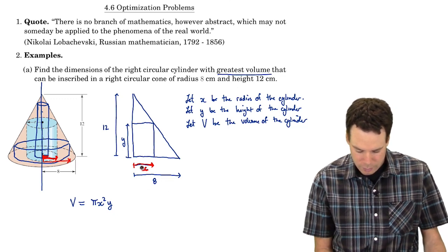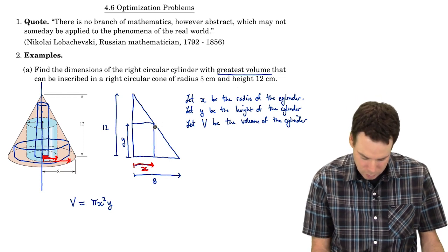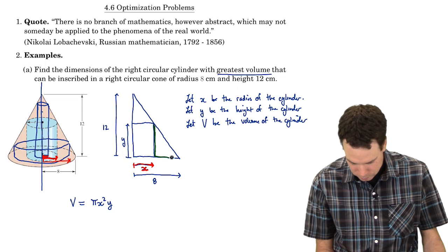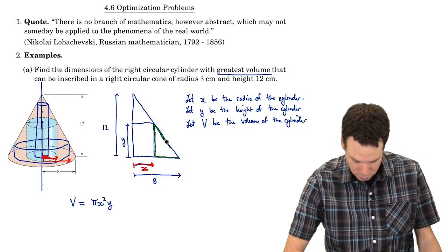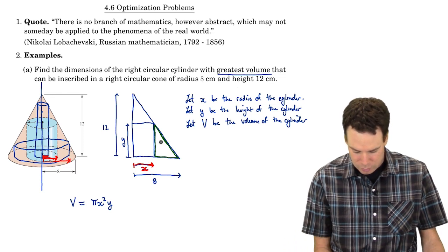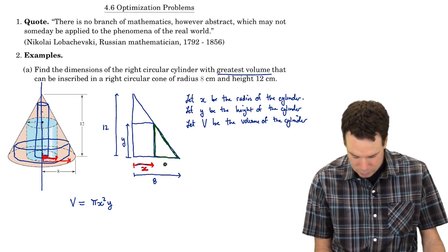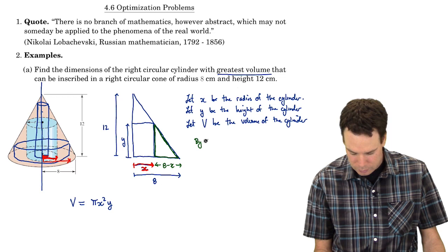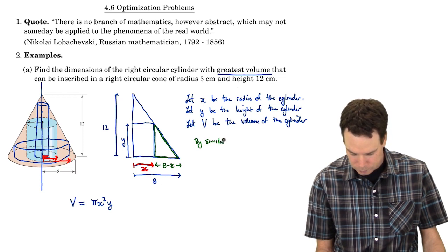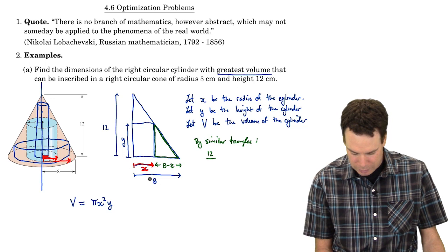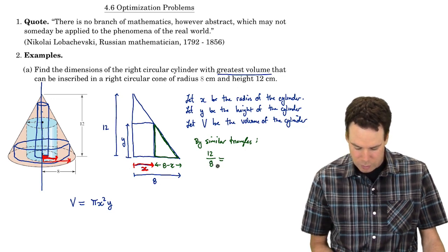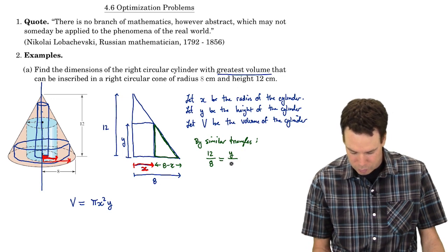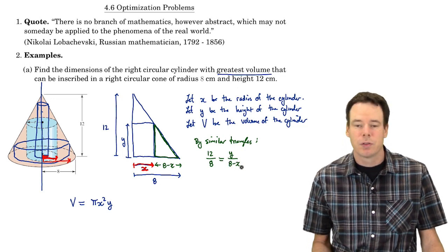I have a set of similar triangles here. The green triangle is similar to the larger triangle it sits inside. The green triangle still has height Y, and its base is 8 minus X — that distance there. So by similar triangles: the height of the big triangle, 12, divided by the base of the big triangle, 8, equals the height of the smaller triangle, Y, over the base of the smaller triangle, 8 minus X. So there's our relationship between X and Y.